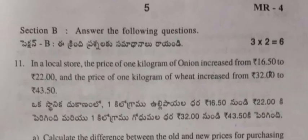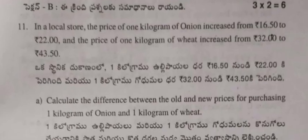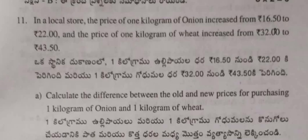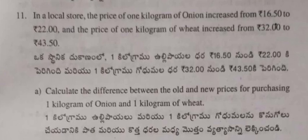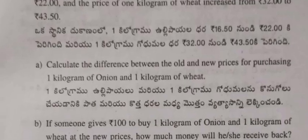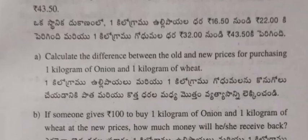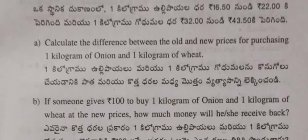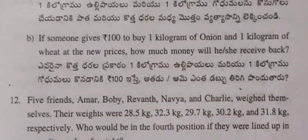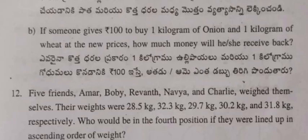Section B: Answer the following questions (3 × 2 = 6 marks). Question 11: In a local store, the price of one kilogram of onion increased from ₹16.50 to ₹22, and the price of one kilogram of wheat increased from ₹32 to ₹43.50. (a) Calculate the difference between the old and new prices for purchasing one kilogram of onions and one kilogram of wheat. (b) If someone uses ₹100 to buy one kilogram of onion and one kilogram of wheat at new prices, how much money will they receive back?